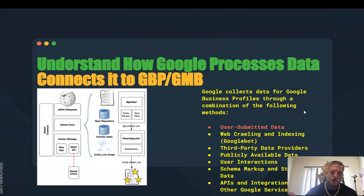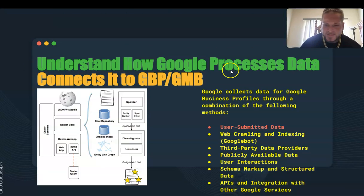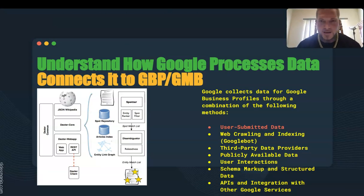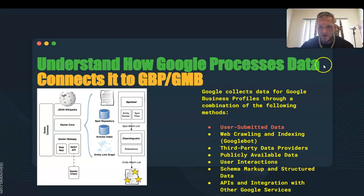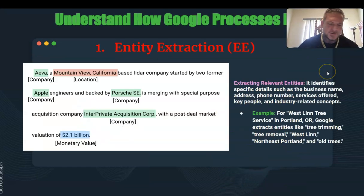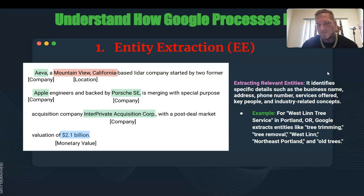First, I want to show you how Google understands and processes the data on a Google Business Profile. Google — the absolute giant conglomerate that it is — goes around and scrapes data from everywhere. That's all you need to know. It's called entity extraction.